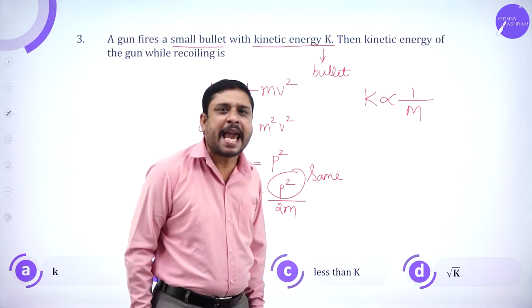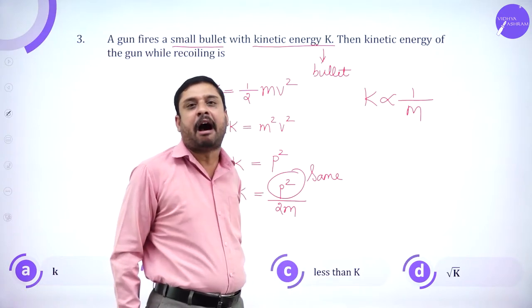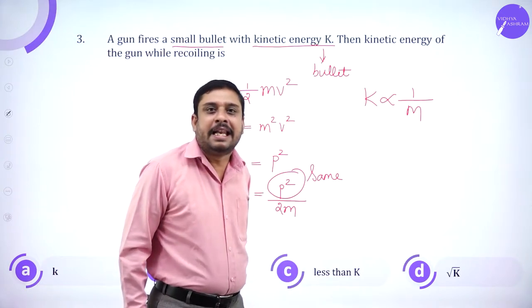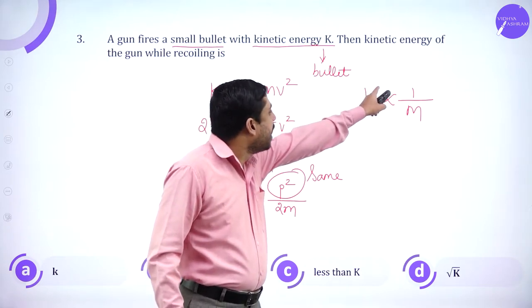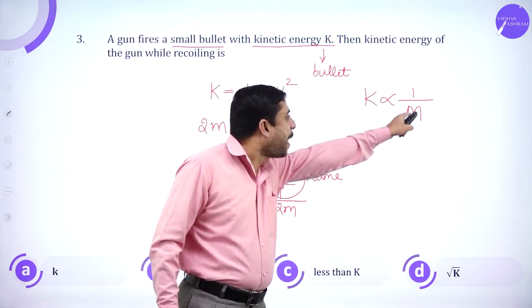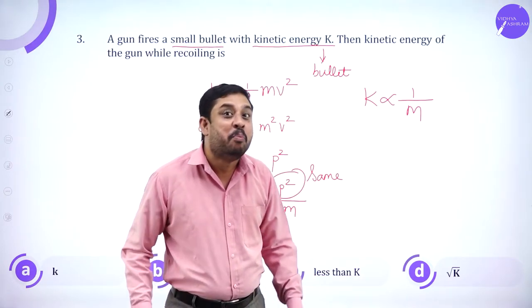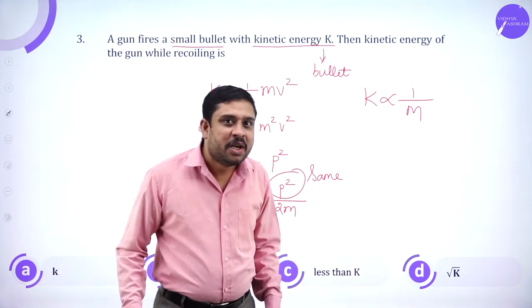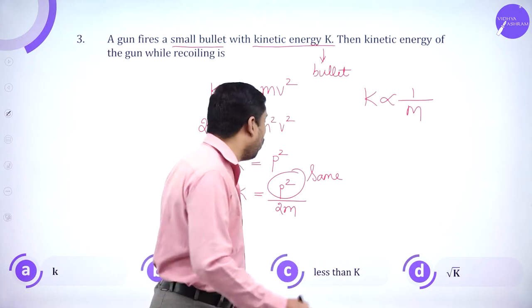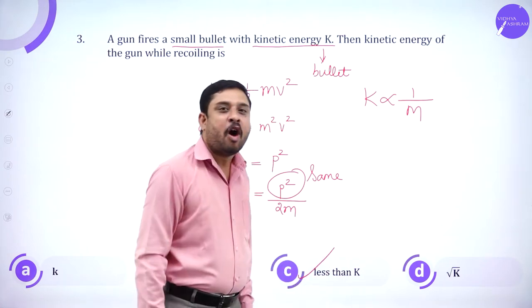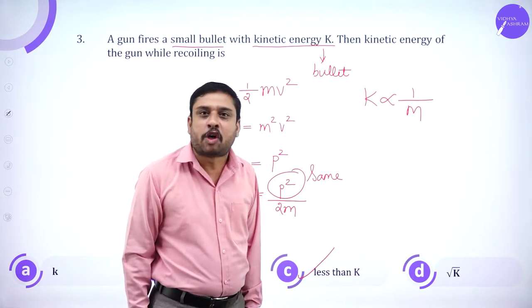Since momentum is the same after firing by conservation of momentum, the gun has more mass, so its kinetic energy should be less. Therefore the kinetic energy of the gun is less than K.